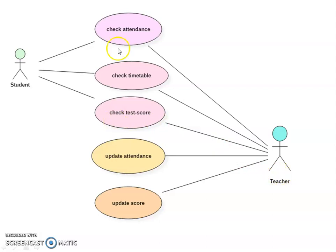And a teacher can do all these five things. Teacher can check attendance, check timetable, check test score, and also other than that, he can update the attendance or he or she can update the score.